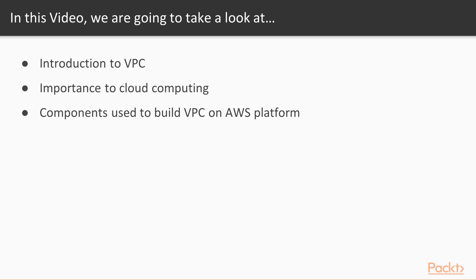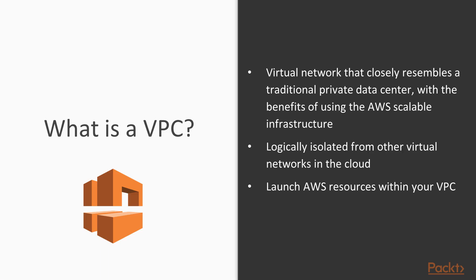In this video we're going to have an introduction to VPCs, why they're important to cloud computing, and some of the components that make it possible for us to build VPCs on the AWS platform. So first of all, what is a VPC? A VPC is a Virtual Private Cloud, and essentially it's a virtual network that closely resembles a traditional private data center with all of the benefits of using the AWS scalable infrastructure.